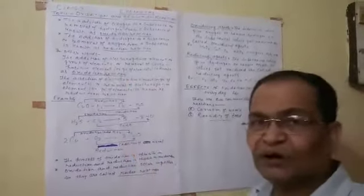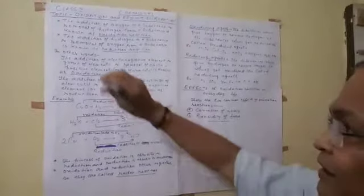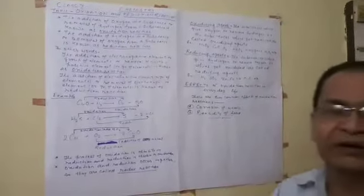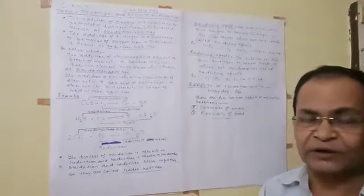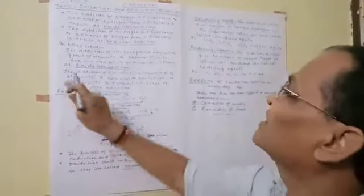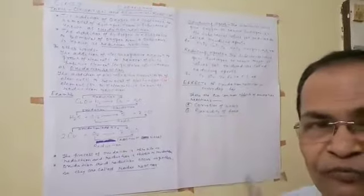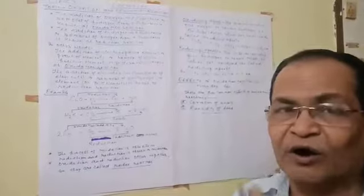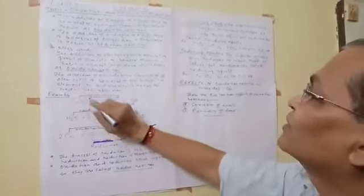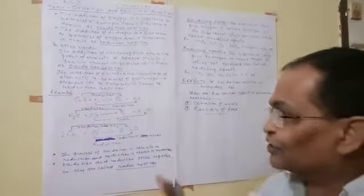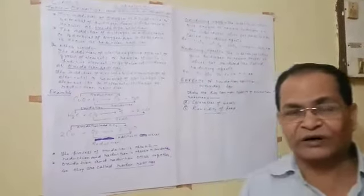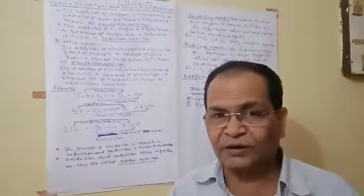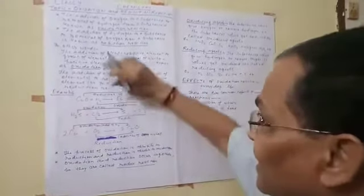Reduction: the addition of hydrogen or removal of oxygen is called a reduction reaction. Similarly, in other words, the addition of an electropositive element or group of elements, or removal of an electronegative element or group of elements, is called reduction.